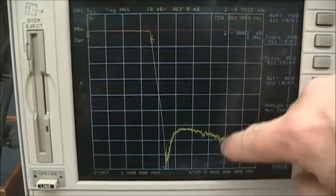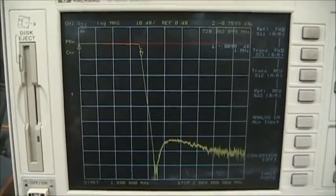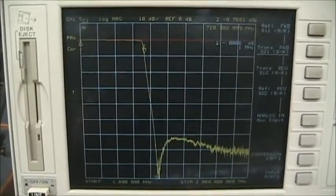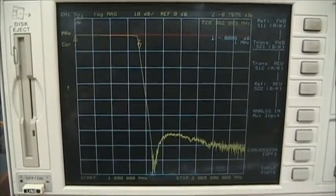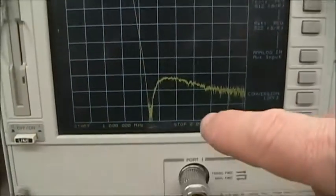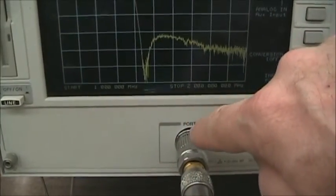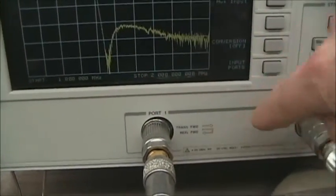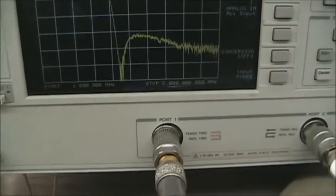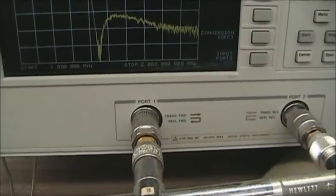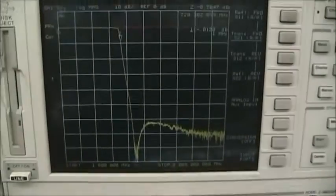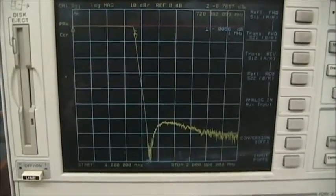You can see the amazing resolution you can get on a network analyzer. This is more than 80, 90 dB worth of resolution. You could never get this on a scope and a signal generator. That's because with the network analyzer, we have control of both the transmitter and the receiver, measuring the transmitted and reflected signals. This is why we use a network analyzer.